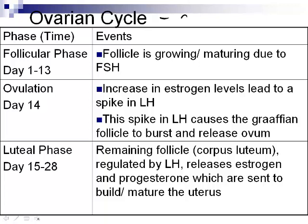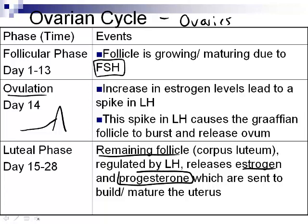There are three phases in the ovarian cycle. First, the follicular phase — the follicle is growing and maturing due to FSH being secreted. On day 14, the increase in estrogen causes a big spike in LH, which causes the Graafian follicle to burst and release the ovum — this is ovulation. From day 15 to 28, the leftover follicle called the corpus luteum, regulated by LH, releases estrogen and heavy progesterone to make the endometrial wall thicker and more mature. Both ovarian phases affect the uterus.